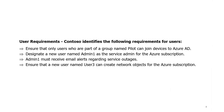User requirements: ensure that only users who are part of a group named 'pilot' can join devices to Azure Active Directory. Designate a new user named admin1 as the service admin — admin1 must receive email alerts regarding service outages. Ensure that a new user named user3 can create network objects for the Azure subscription.